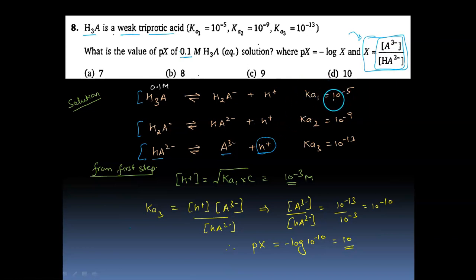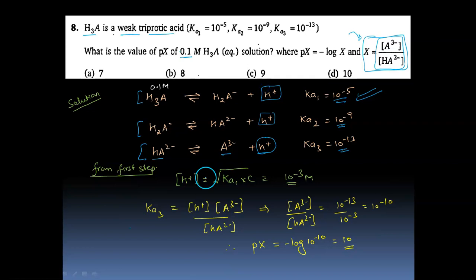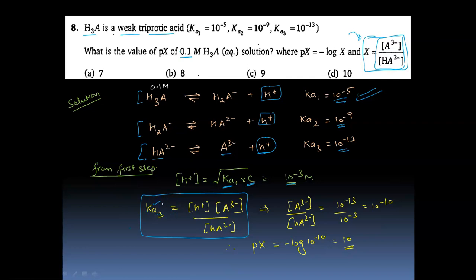Ka1 is small, Ka2 is smaller still, and Ka3 is very, very small. This means H⁺ from the second and third stages can be neglected; essentially all H⁺ comes from the first dissociation. Using Ostwald's dilution law: [H⁺] = √(Ka1 × C) = √(10⁻⁵ × 0.1) = 10⁻³ M. Substituting into the Ka3 expression with Ka3 = 10⁻¹³ and [H⁺] = 10⁻³, we get x = 10⁻¹⁰. On a p-scale, Px = −log(10⁻¹⁰) = 10. Hence the answer is 10.